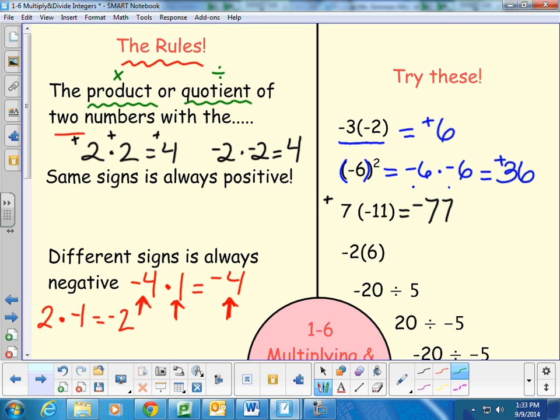So then we're on to another multiplication. Negative 2 times 6. The signs are different of two numbers, so my answer is negative. Different negative. Negative 2 times 6. 2 times 6 is 12, so this will be a negative 12.